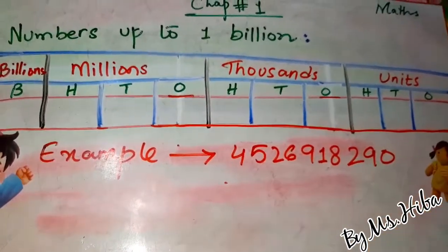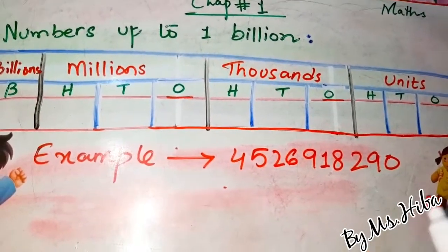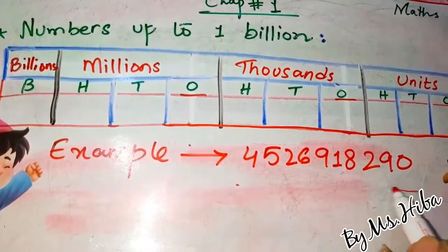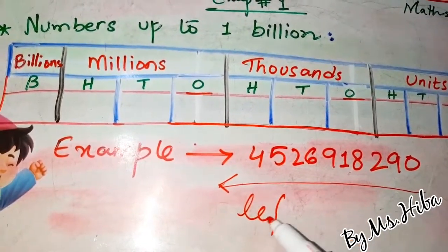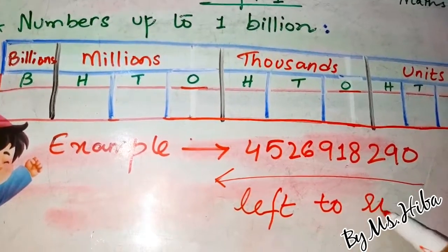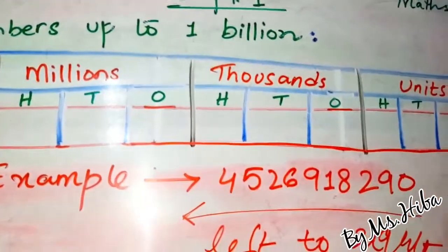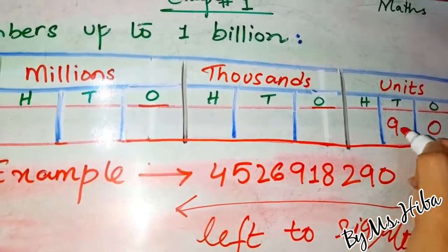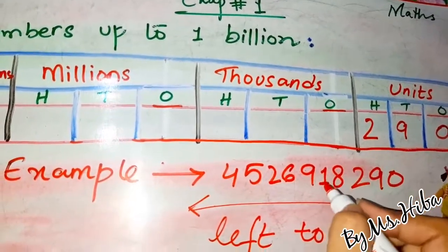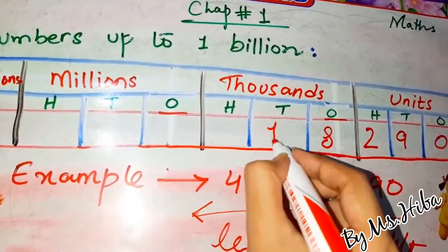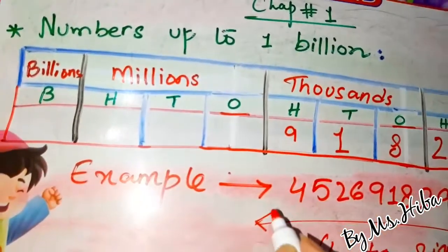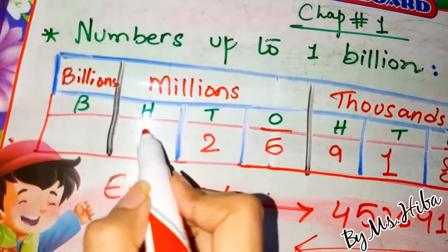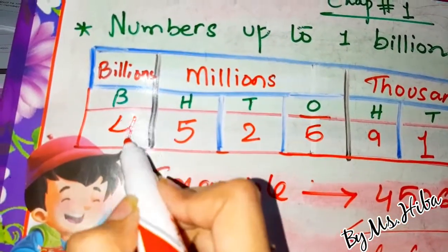Now let's consider this example. We start putting the numbers into each column. As we studied in the previous class, we put numbers in columns starting from the left side and ending at the right side, left to right. So first we put zero in ones, then nine, then two in units, then eight in thousands ones, then one in tens, nine in hundreds, six in ones, two in tens, five in hundreds, and four in billions.